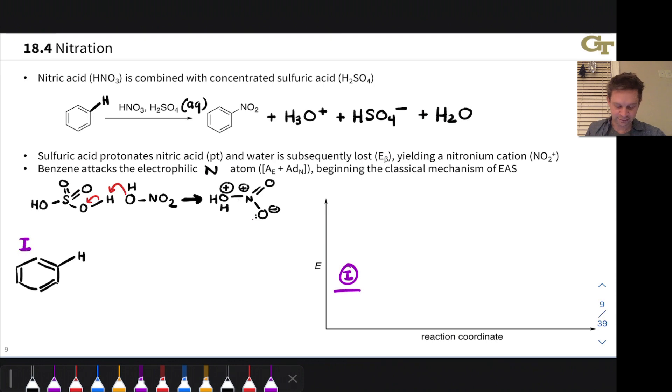And that would involve electron flow like this, and would generate this disturbing reactive intermediate. Disturbing because it has two positive charges adjacent to each other. Positive charge on N in the nitro group, built into nitric acid, and positive charge on this O that we just protonated. So that's actually a little bit horrifying.